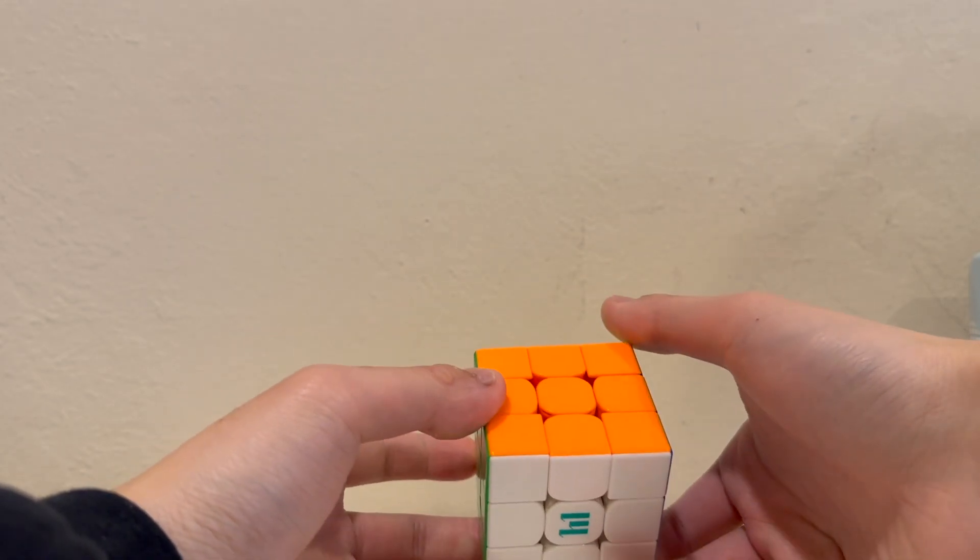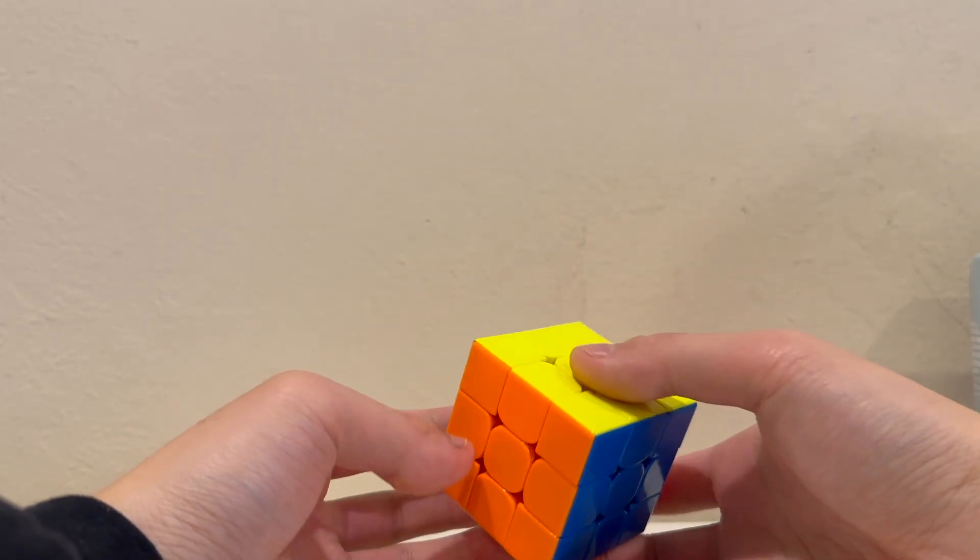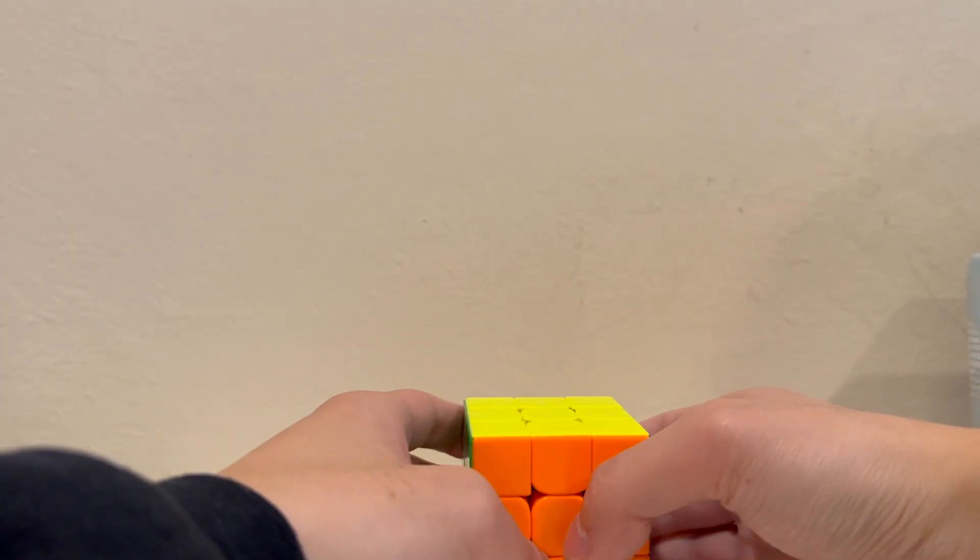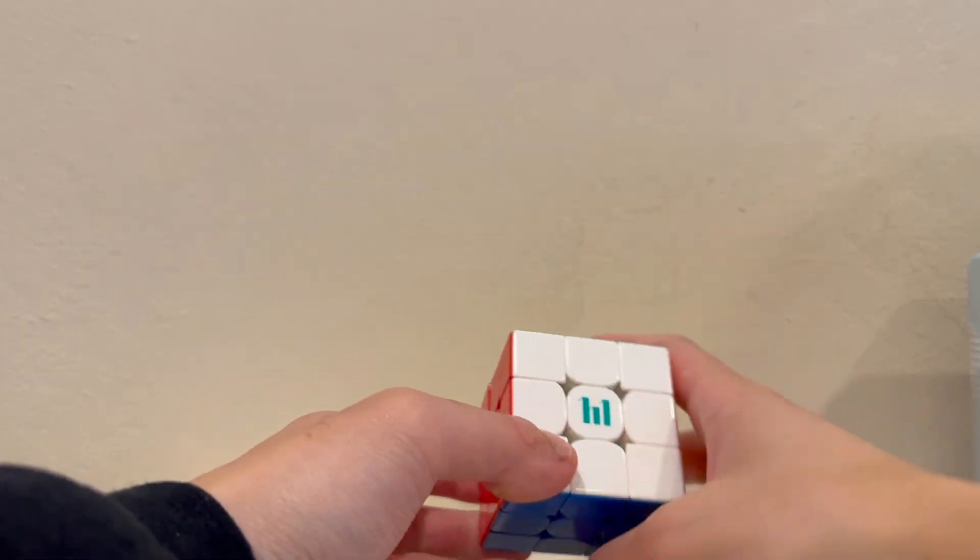And then he had a u prime with a PLL skip, just one move PLL skip, amazing solve. Yeah, so that's how Max Park was able to break the Rubik's cube world record.